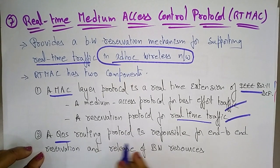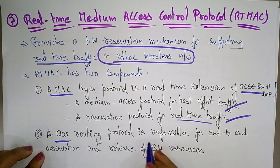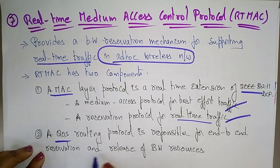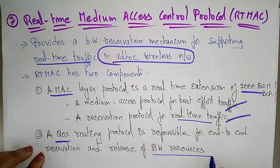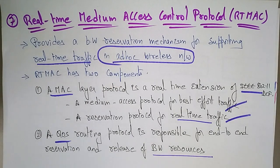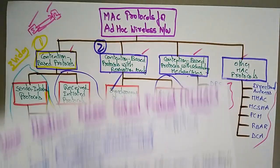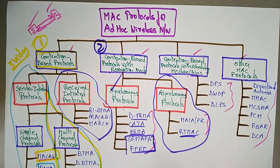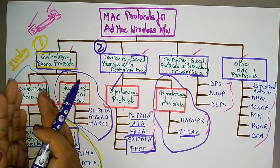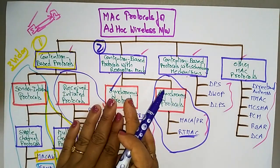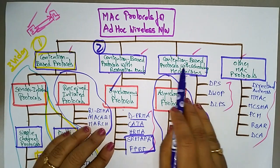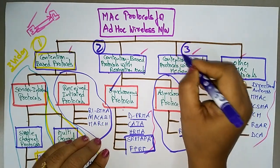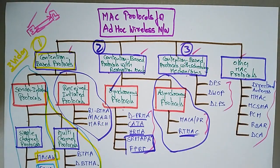A quality of service routing protocol is responsible for end-to-end reservation and allocation of bandwidth resources. So that covers the asynchronous contention-based protocols with reservation mechanisms. We have completed concepts one and two; in the next videos we will see the third and fourth. Thank you.